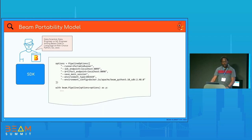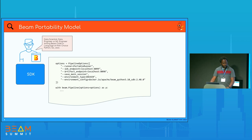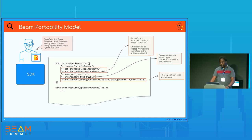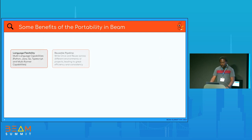Looking at the entry point: you specify the pipeline options with the job endpoint where you'll submit your job, the artifact endpoint for all libraries and dependencies, then different environments — in this case Docker, or external in the case of Kubernetes. These are the endpoints, and you can check the documentation for all the different input combinations your job needs. In this example, I'm running a Python Beam job.